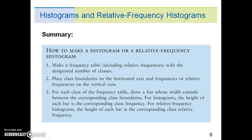In summary, to make a histogram or relative frequency histogram: First, make a frequency table including relative frequencies with a designated number of classes. Step 2, place class boundaries on the horizontal axis and frequencies or relative frequencies on the vertical axis. For each class of the frequency table, draw a bar whose width extends between the corresponding class boundaries.